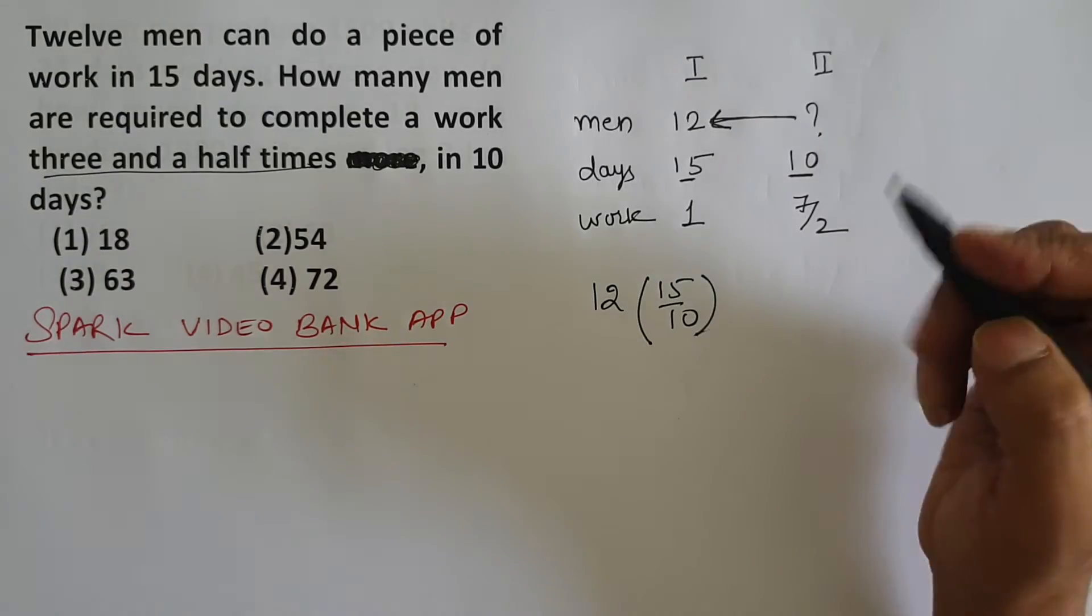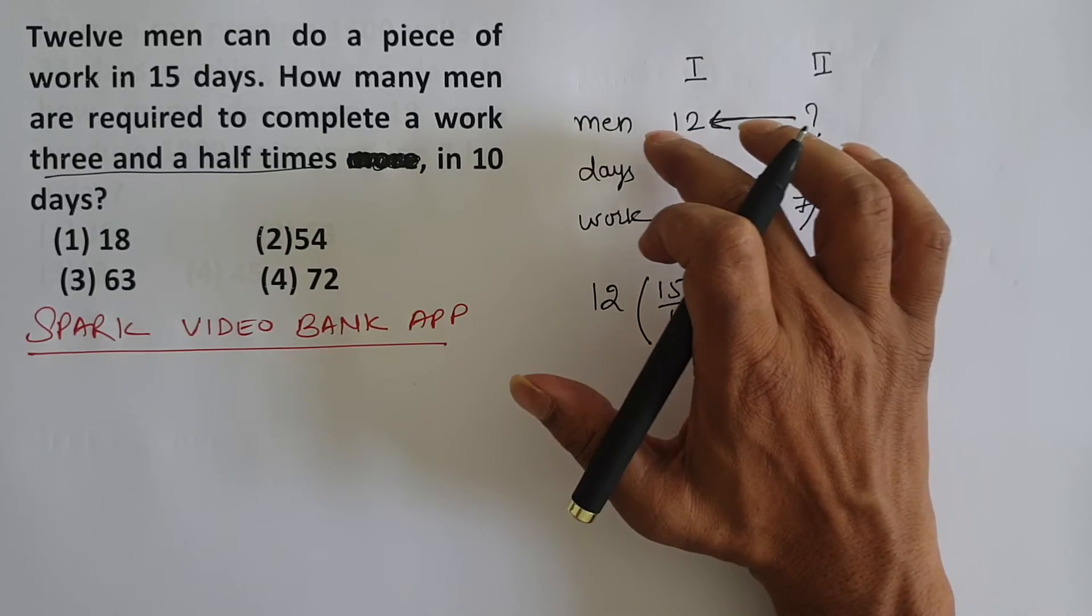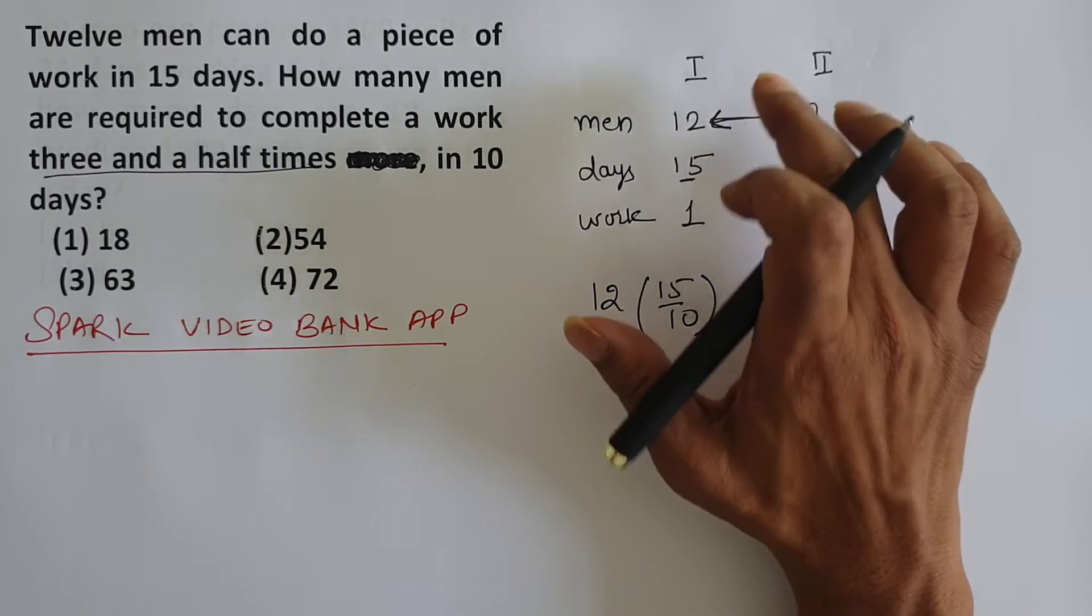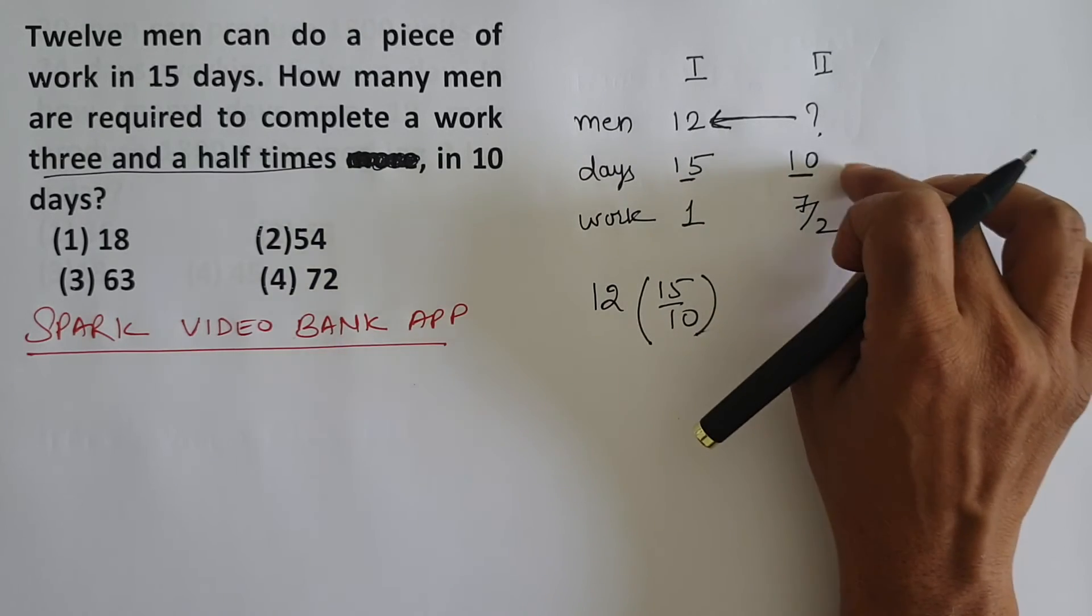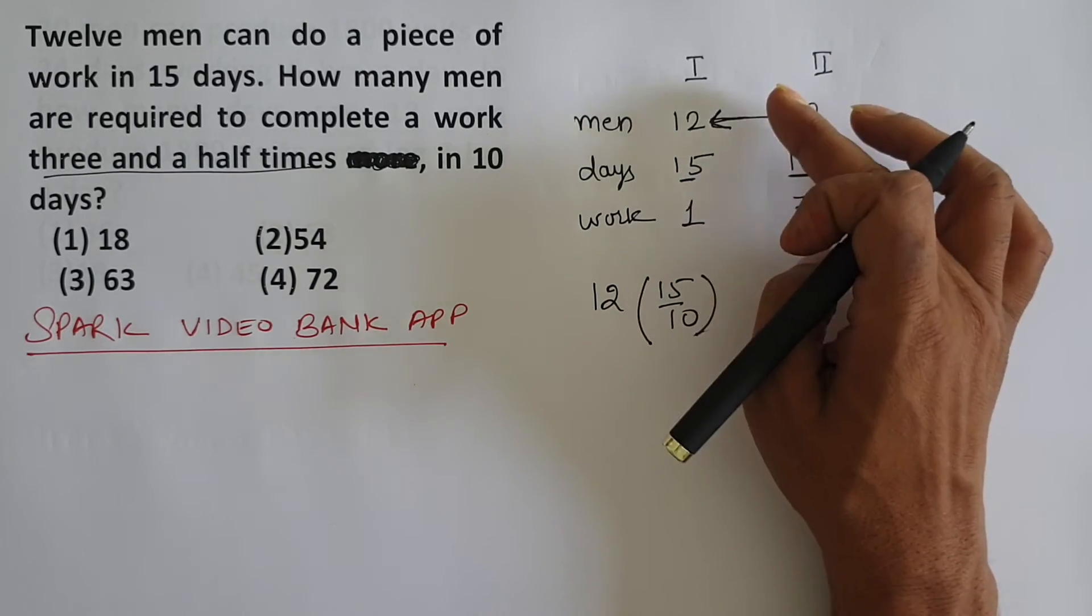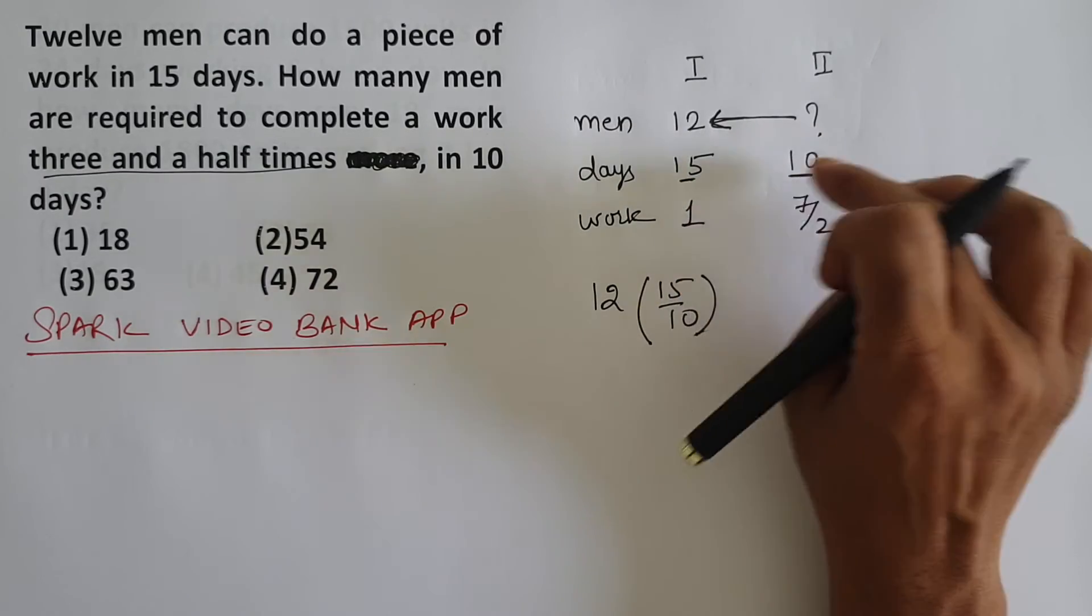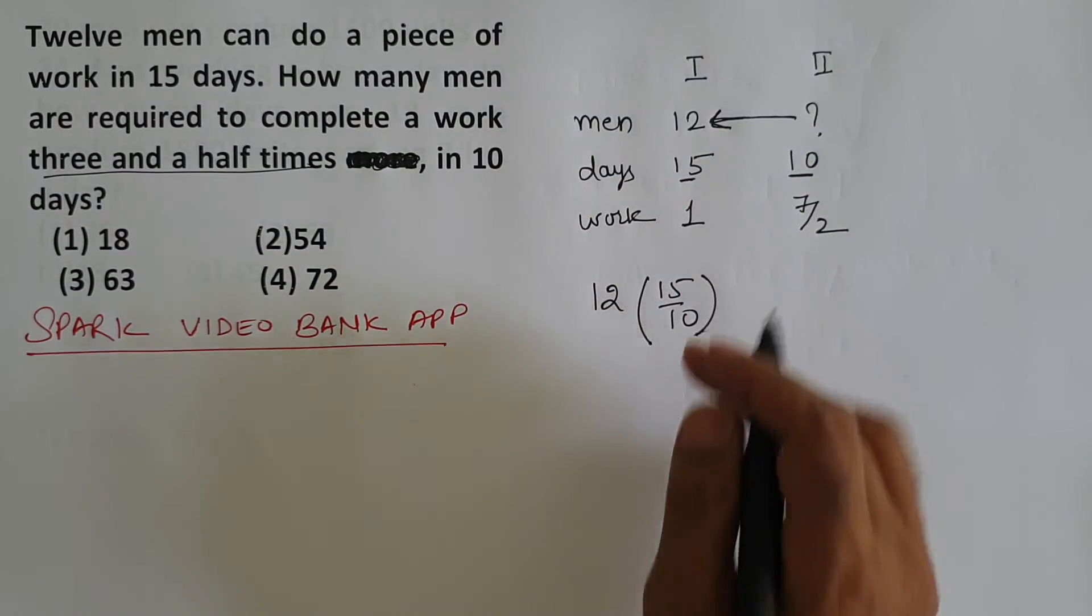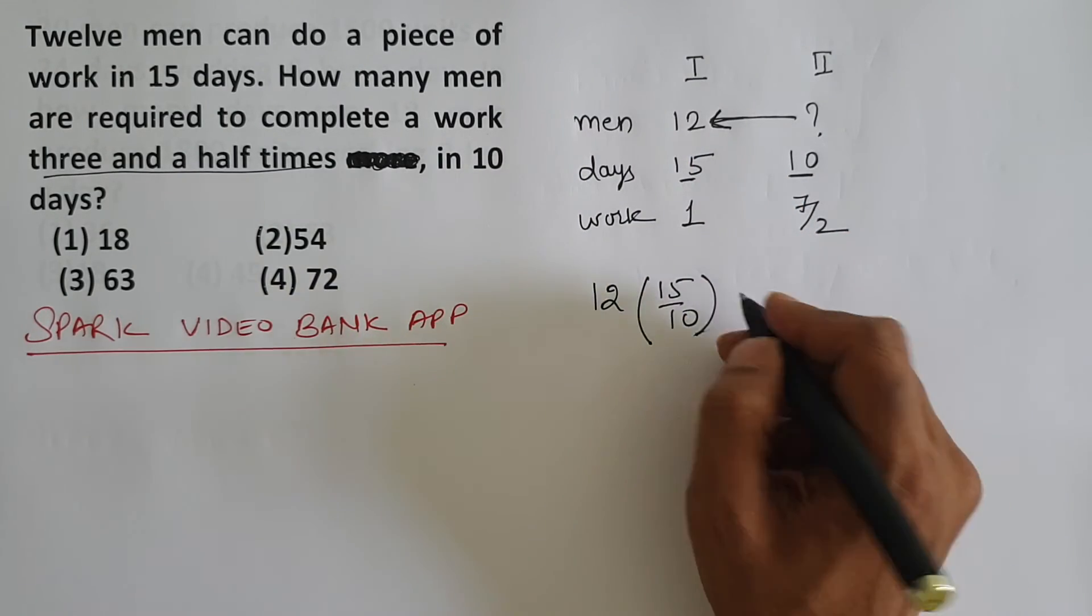Look at it in another way - if you have to increase, if you understood that men will increase, and you have to finish quickly, instead of 15 it's 10 days, then you'll have to increase men. To increase men, numerator will have the bigger number and denominator will have the smaller number. So what impact will be on men - men will become 12 into 15 by 10.